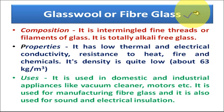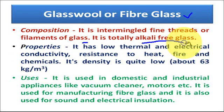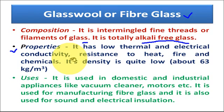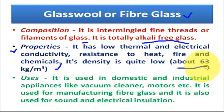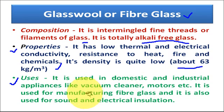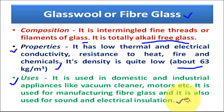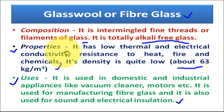Next is glass wool or fiberglass. It is composed of intermingled fine threads or filaments of glass and is totally alkali-free. Properties include low thermal and electrical conductivity, resistance to heat, fire, and chemicals, and a quite low density of around 63 kg per cubic meter. It is used in domestic and industrial appliances like vacuum cleaners and motors, for manufacturing fiberglass, and for sound and electrical insulation.